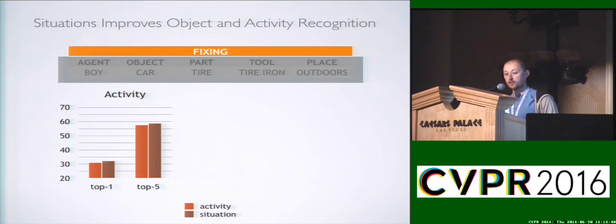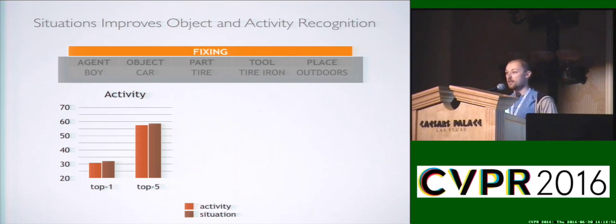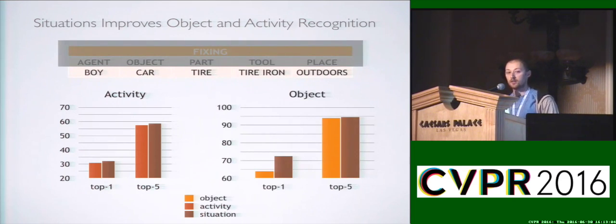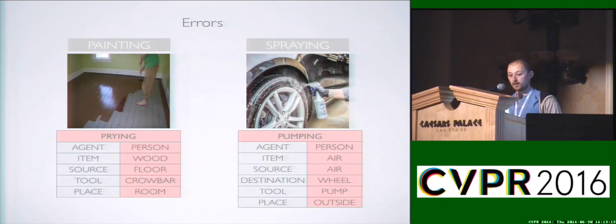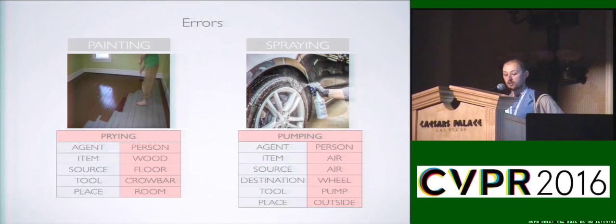We also evaluated the degree to which situations can provide context for object and activity recognition. The setup is to train a CNN classifier that just predicts the verb and compare it to predicting an entire full situation. Situations actually do a little better at predicting activities, and the same holds for objects — reasoning and predicting objects in context with the whole situation is better than independently predicting any of the objects. Some errors actually show the model is doing very well at context; for example, a spraying image is predicted as pumping, but this is a common view for pumping up a wheel.